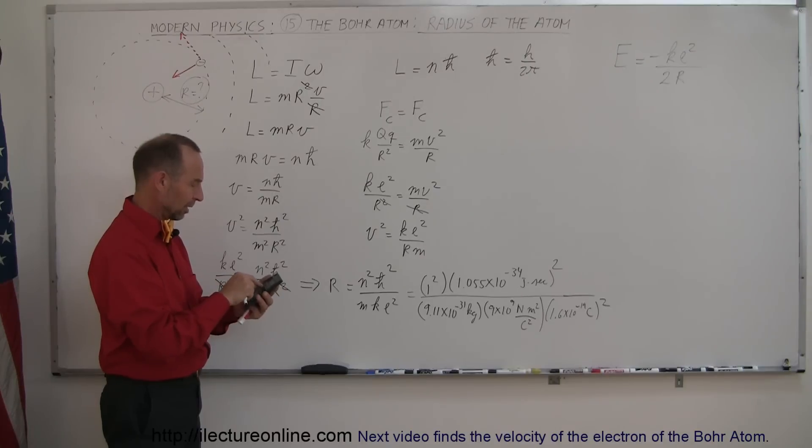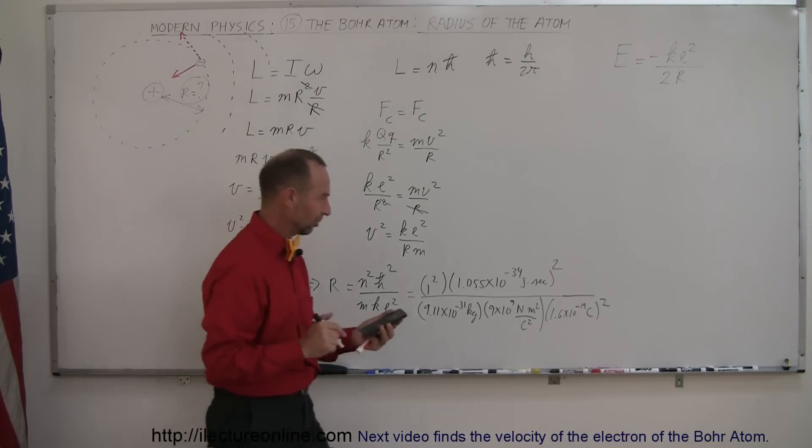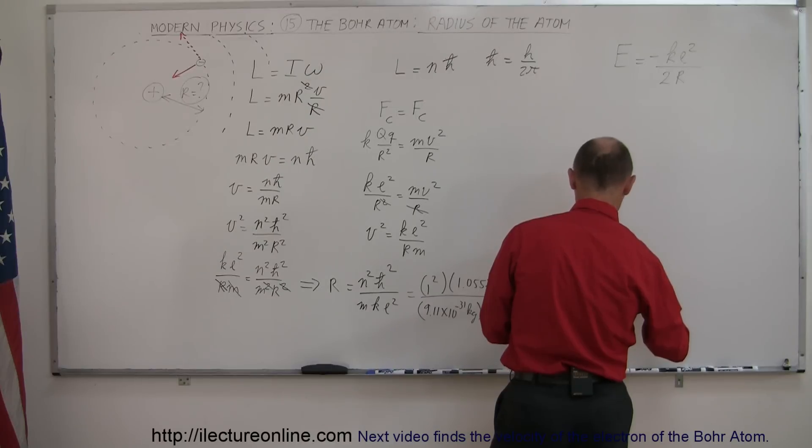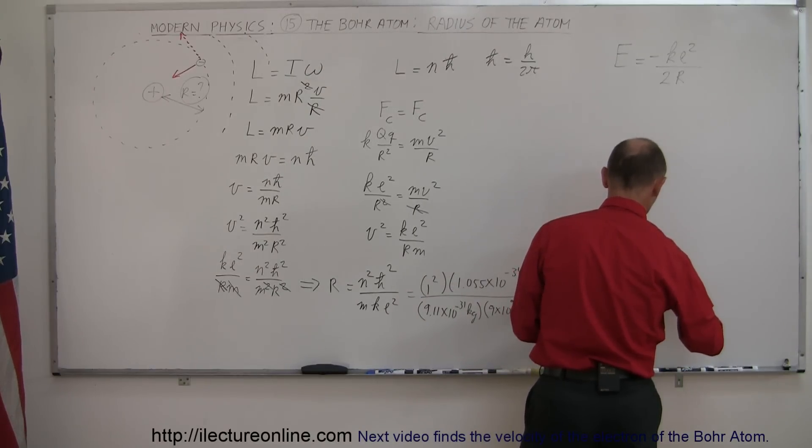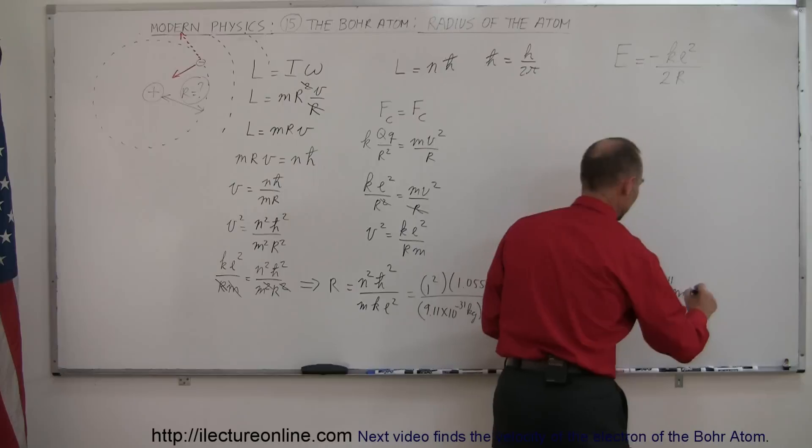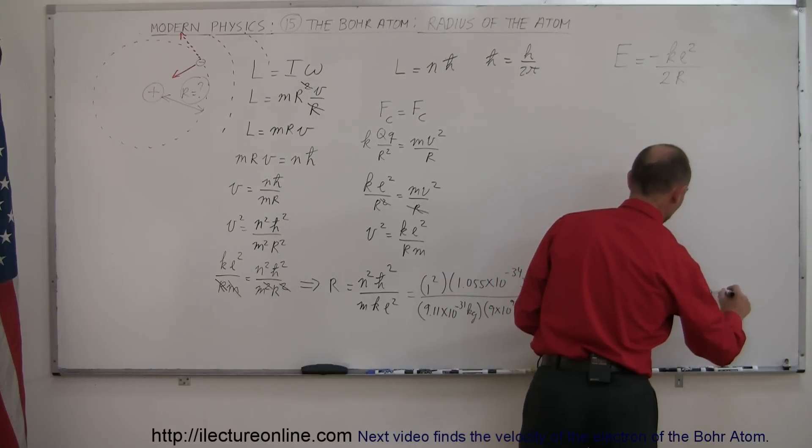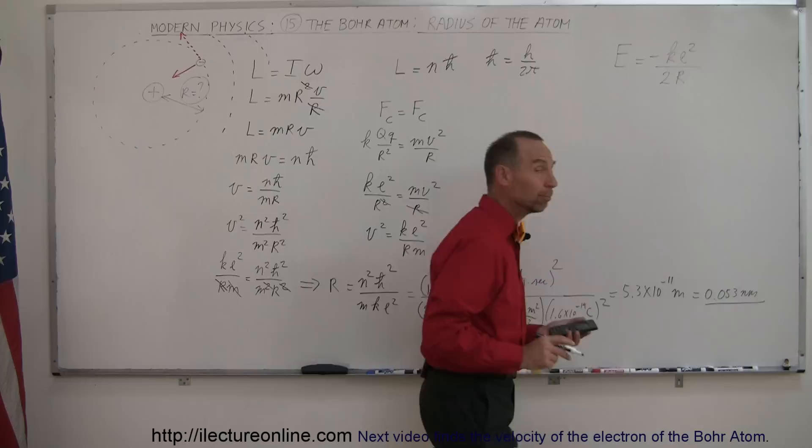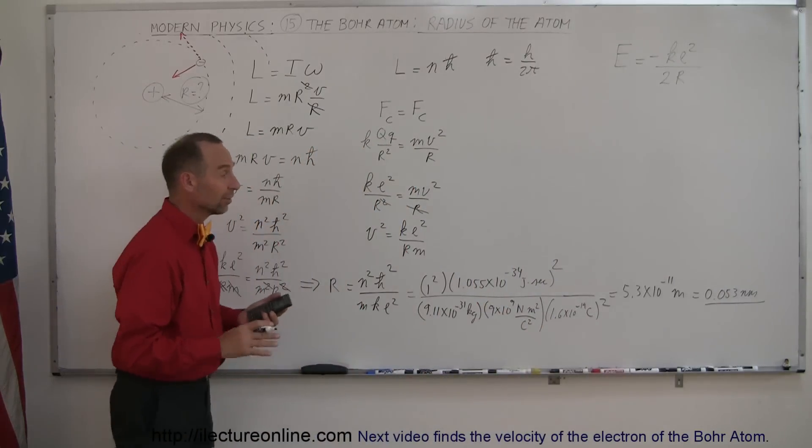And there it is: this is equal to 5.3 (round off to two significant figures) times 10⁻¹¹ meters. If you convert that to nanometers, that would be 0.053 nanometers. That is the Bohr radius - that was actually the way they calculated the radius of the hydrogen atom.